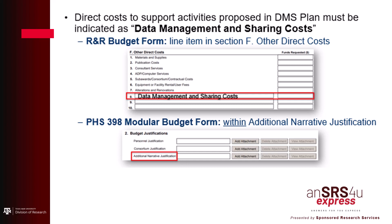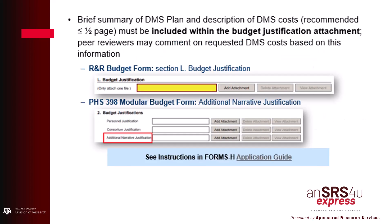All sub-recipients should discuss data sharing costs with the prime to ensure agreement on all costs. The top example shows where the budget justification is attached when using the R&R budget form. The bottom example shows where the justification is attached for a modular budget. In the budget justification, supporting details including a breakdown of any personal effort must be outlined in the budget justification attachment in a clearly labeled section: Data Management and Sharing Justification. The recommended length of justification should be no more than half a page. If there are no anticipated data management and sharing costs, this should be noted in the budget justification.